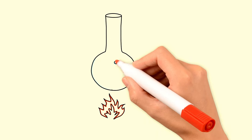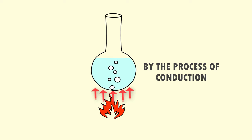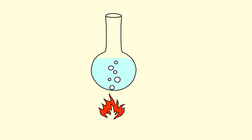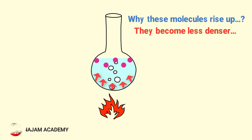Another example of convection is the boiling of water. If you place a flask filled with water on fire, there is contact between the fire and the flask, so by conduction heat energy transfers from the fire to the water. The water molecules, being a fluid, absorb heat energy and rise up because they become less dense, while the surrounding molecules are more dense. This density difference causes the heated molecules to rise up.